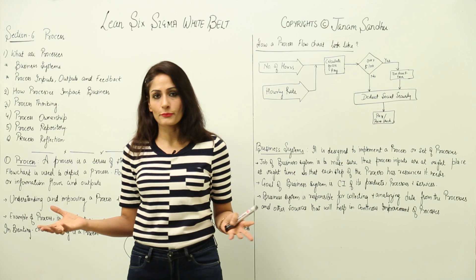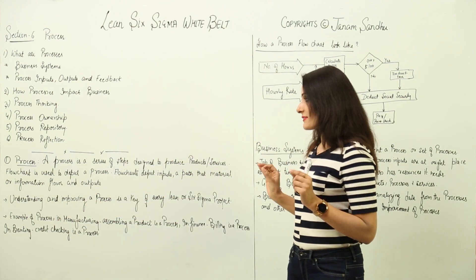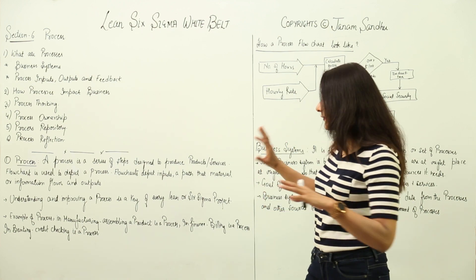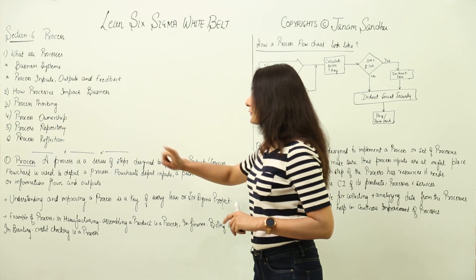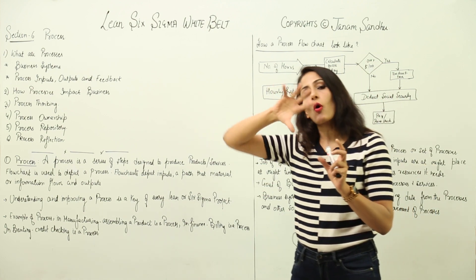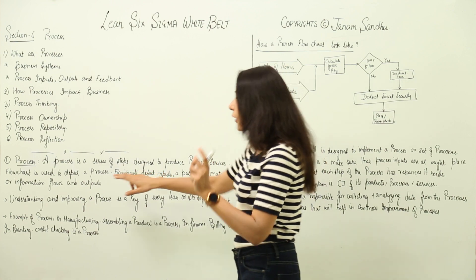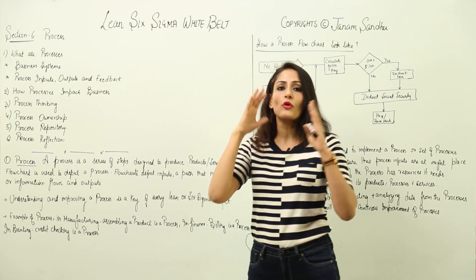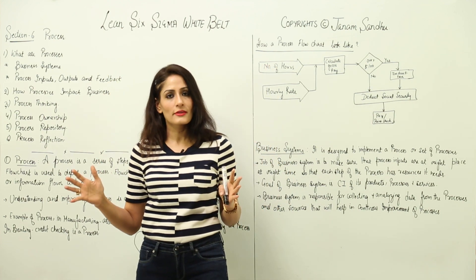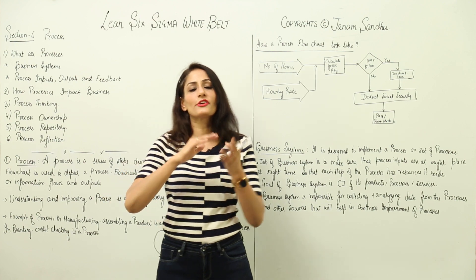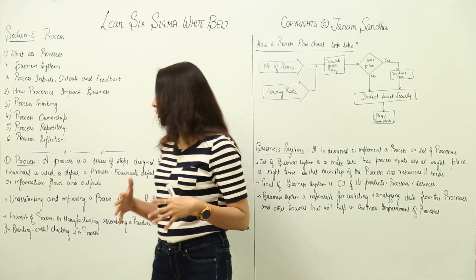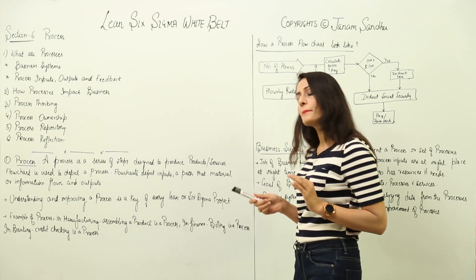So let's start with: what is a process? A process is a series of steps designed to produce a product or service. We use a flow chart to depict a process. Flow charts show what the inputs of the process are, how the material or information flows through the process, and finally what the output is. When we talk about value stream maps, SIPOC, or process maps, all of them use flow charts. They break down a product into each process, and a process into further tasks or sub-processes.